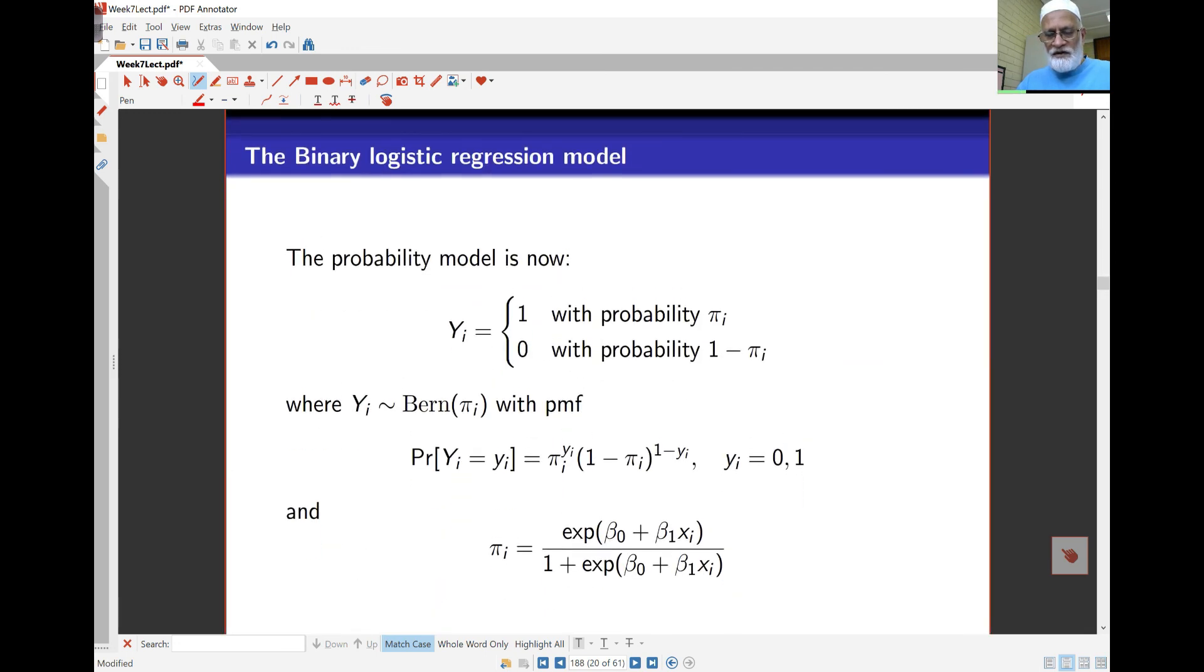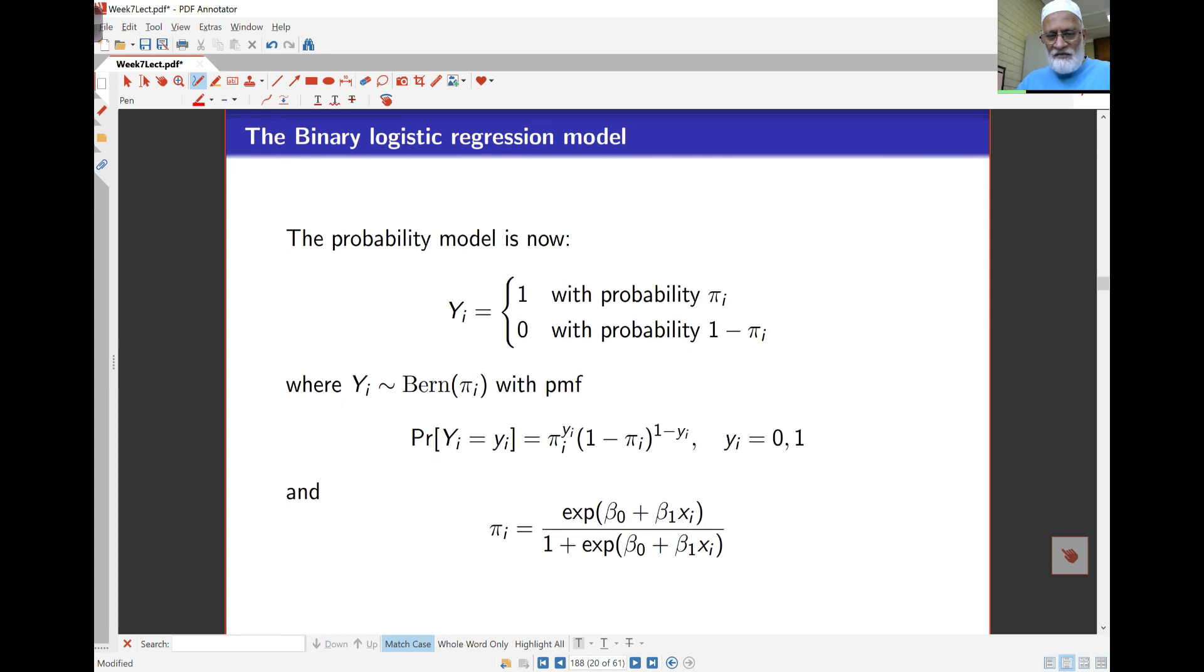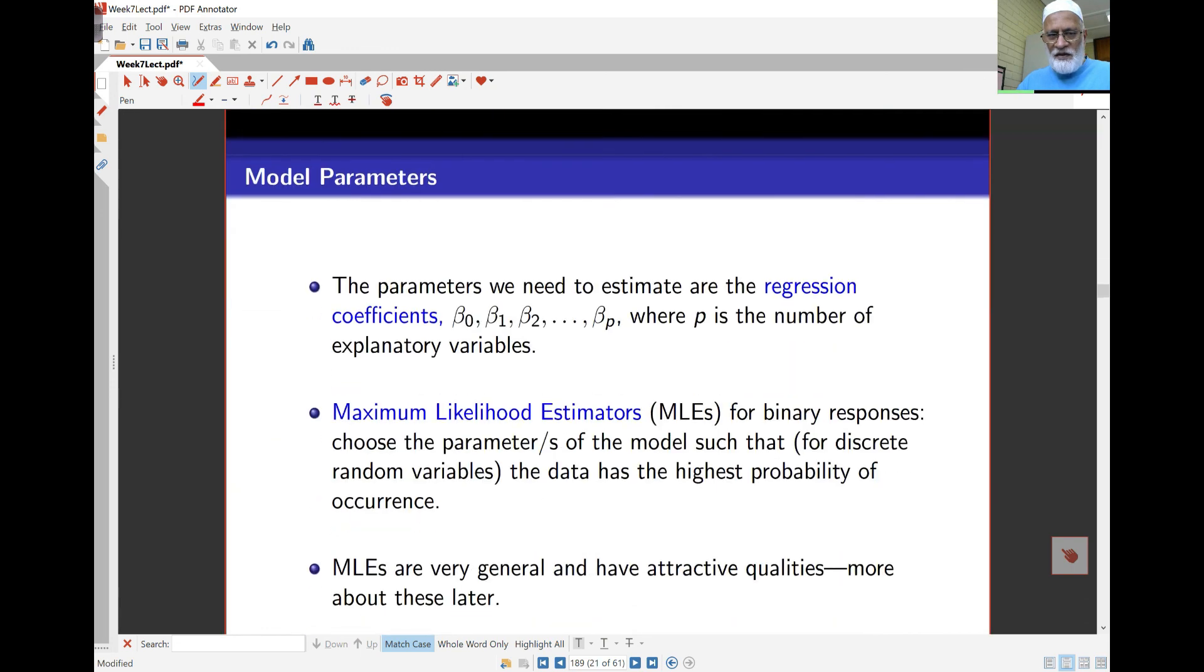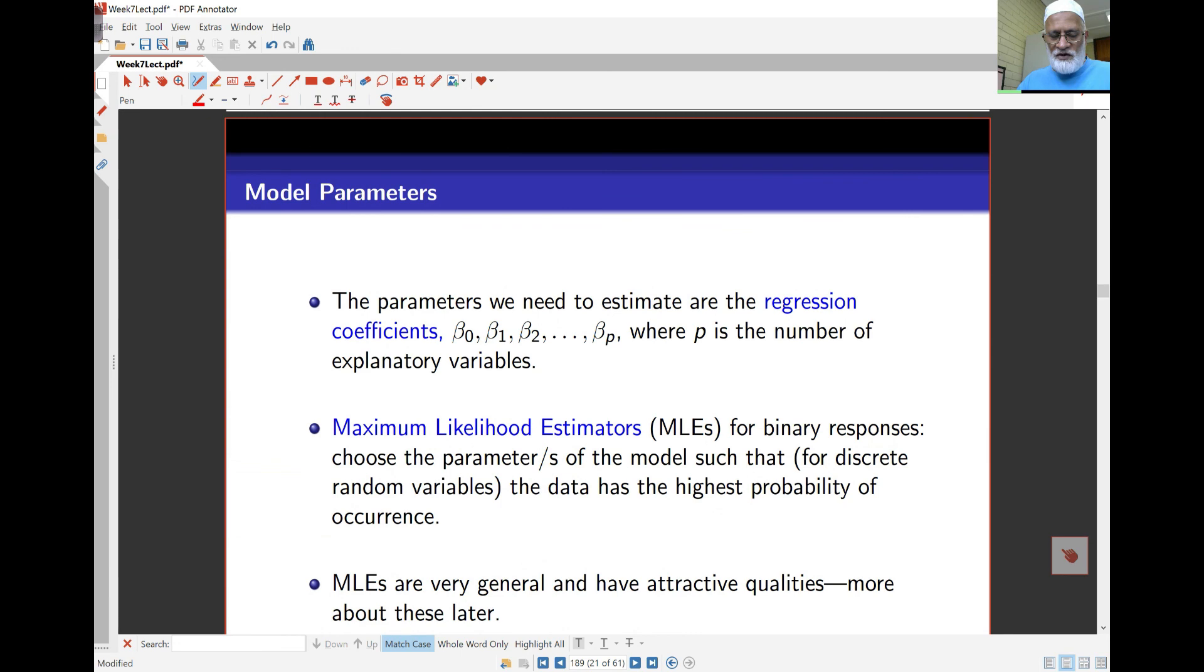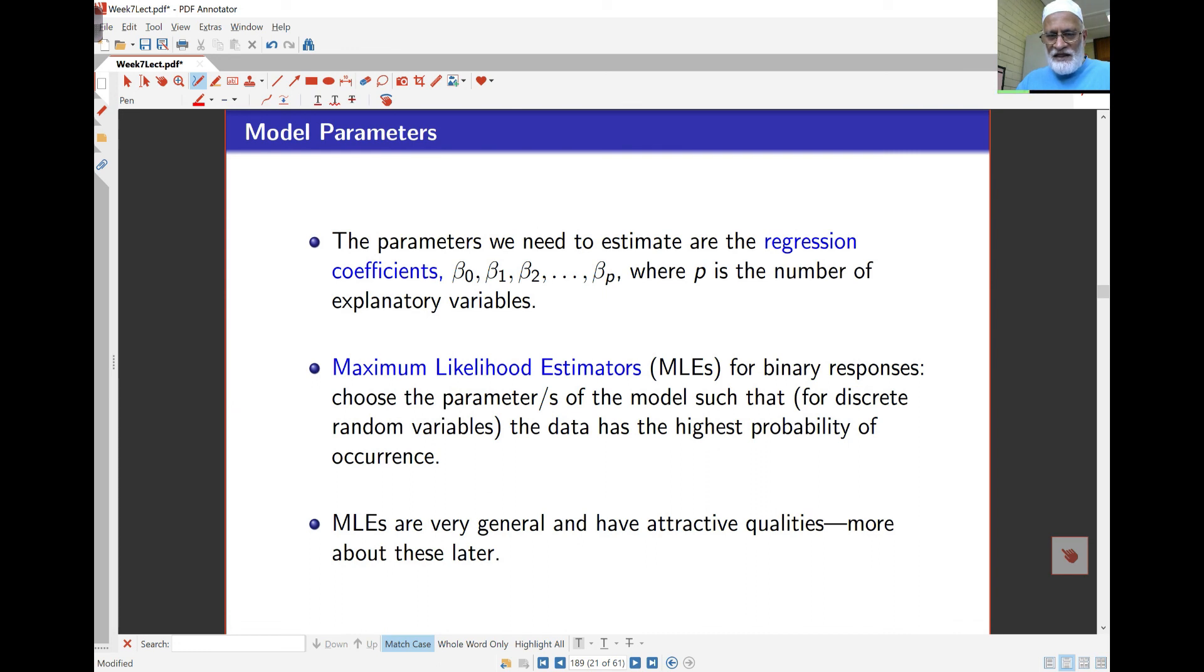Just revising: the binary logistic regression model is where the response y is binary with probability of 1 being πi and probability of 0 being (1 - πi). The probability mass function is as I have over there. πi can be found by taking a look at the regression equation turned around. Model parameters here, depending on how many variables are fitting, would be β0, β1, and so on. These can be estimated by maximum likelihood, which is a very neat, simple way of doing it mathematically. Maximum likelihood estimates have some very nice properties, which we'll see later on.